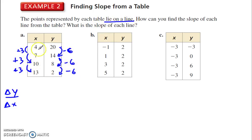So they weren't lying to us. This is a constant rate of change, so it is a linear function. But the change in y is negative 6 over the change in x is 3. So this is negative 2. So the slope here is negative 2.